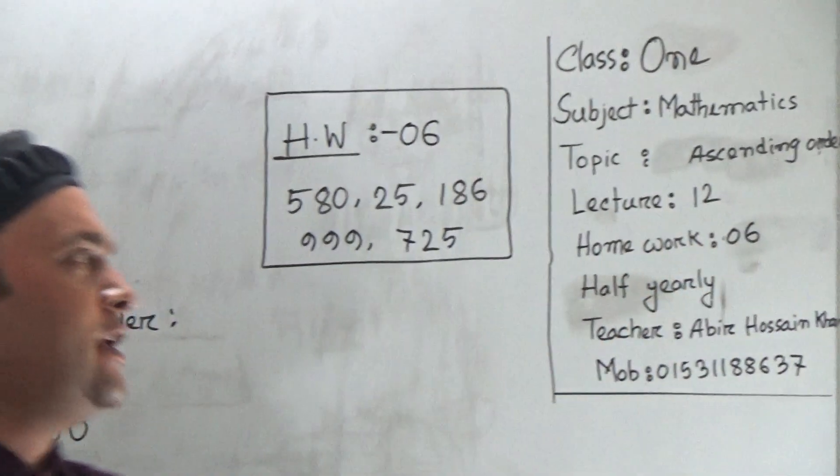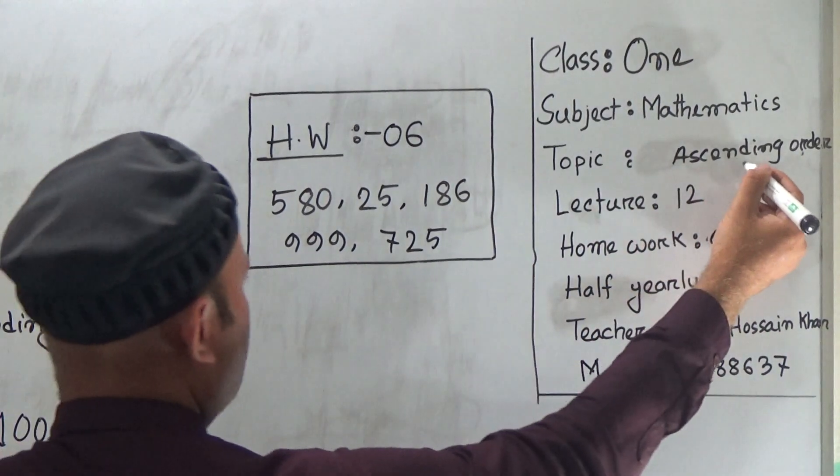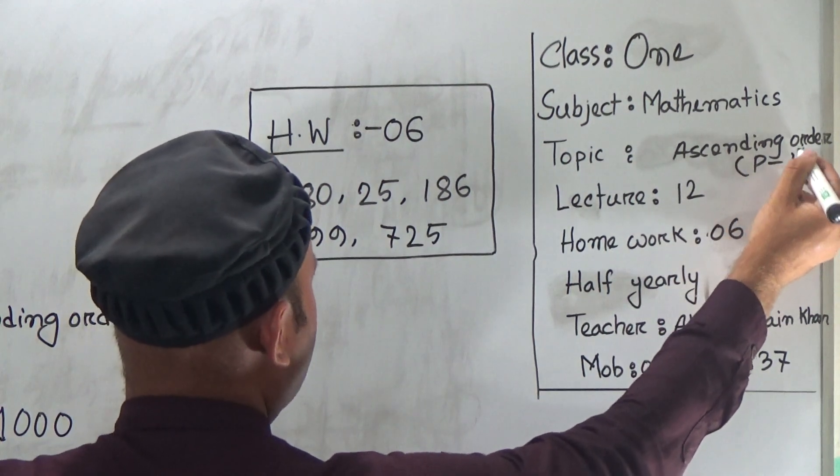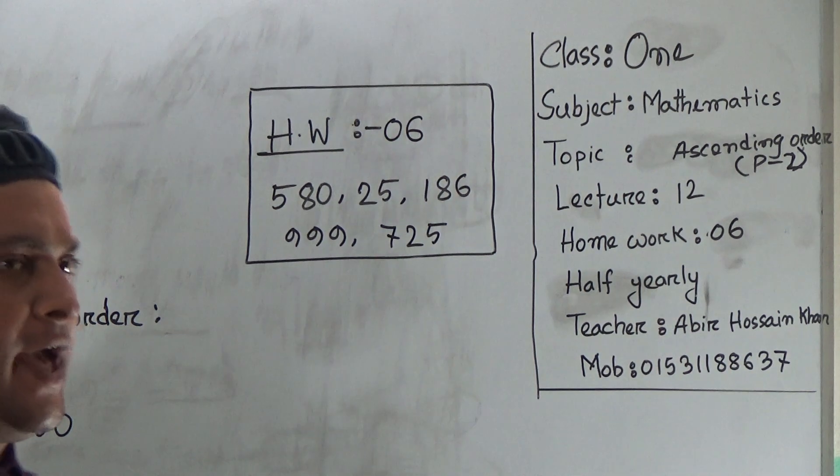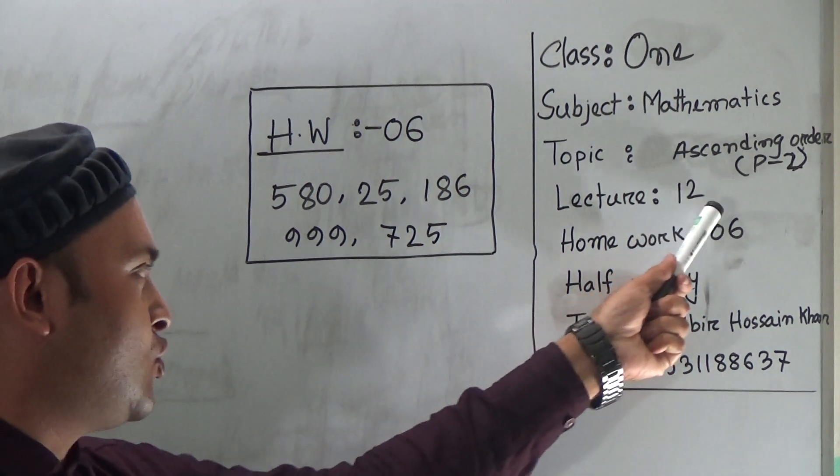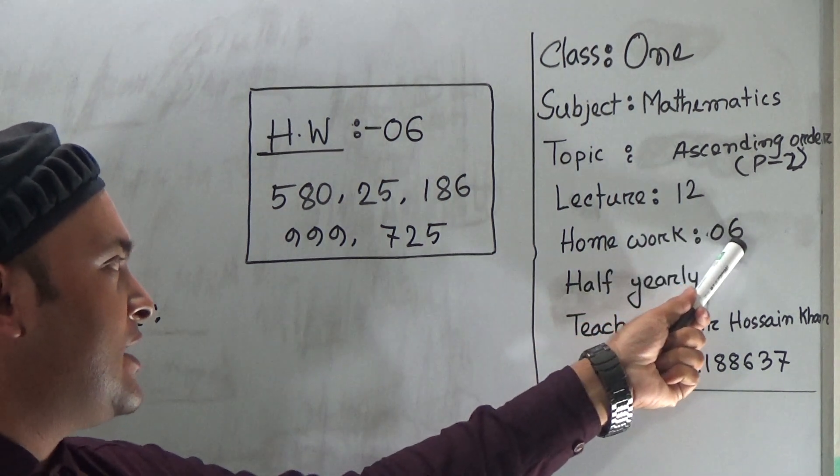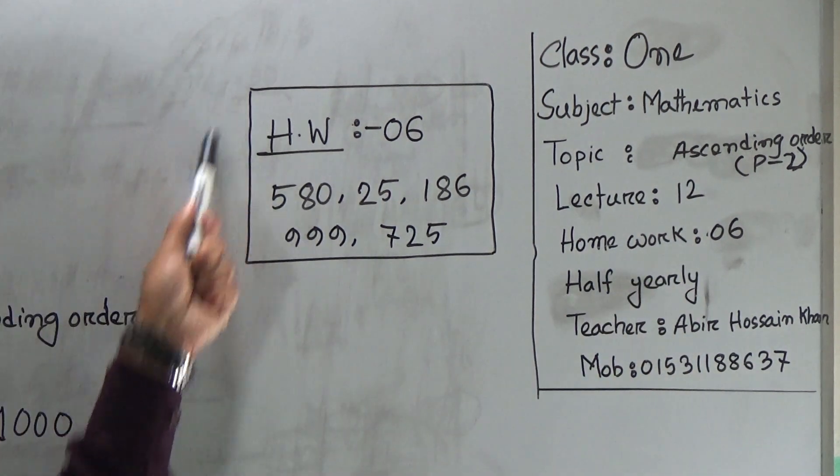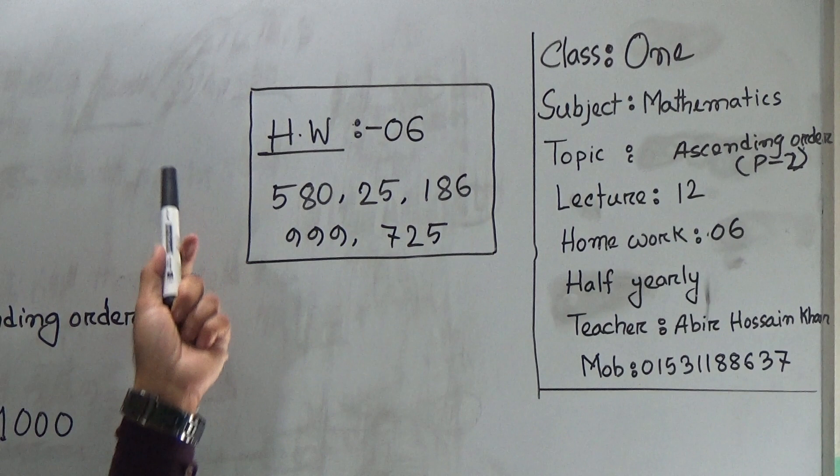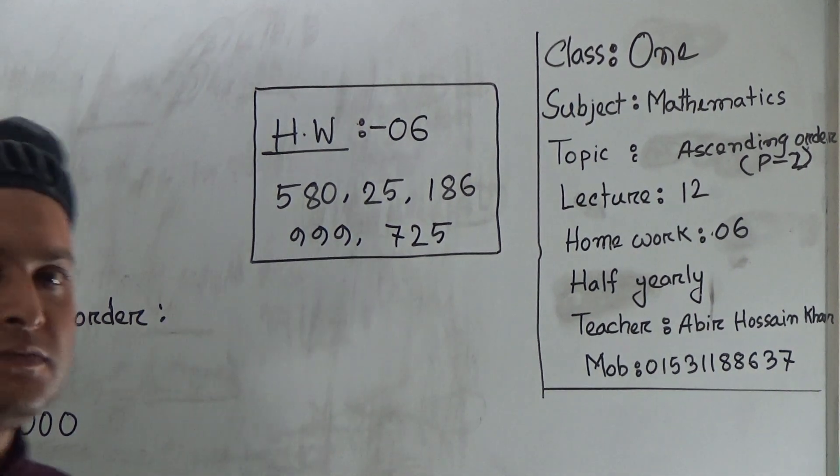Ascending Order, and it will be Part 2. You have already learned Part 1. Our lecture is 12 and homework will be 6. This is included in half-yearly syllabus and this is your homework. You have to submit this one. Let's start our class.